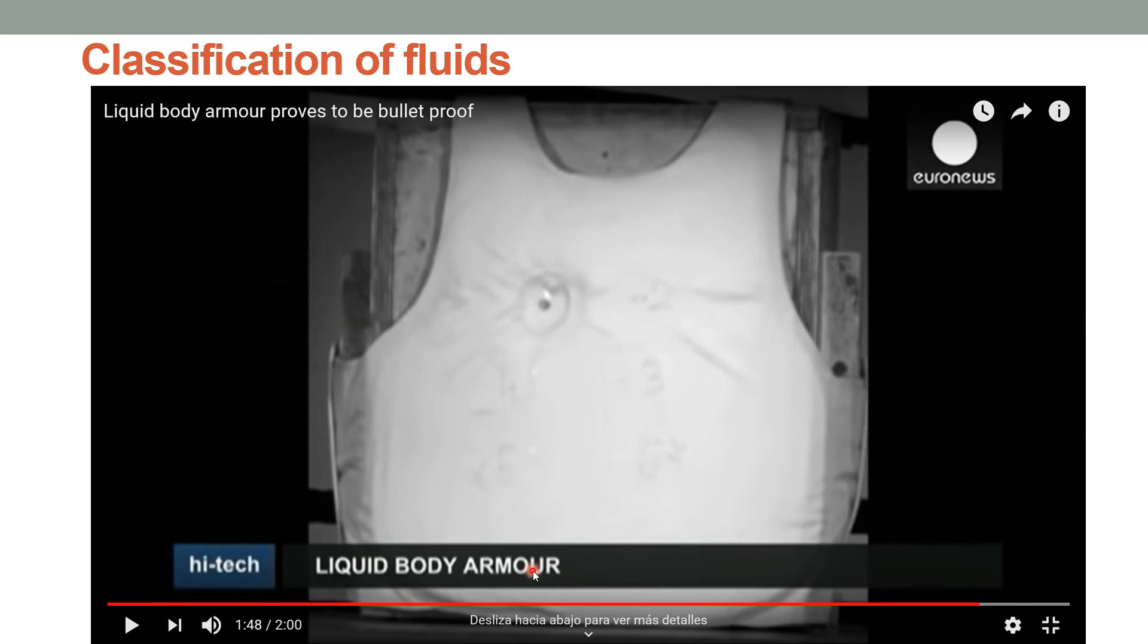Another example is the development of a liquid material that behaves as a dilatant and that has been designed to improve the protection of bullet-proof vests. In comparison with the traditional vest, this new design increases the movement capacity of the person who uses it.